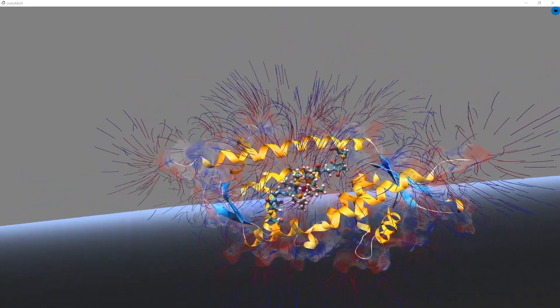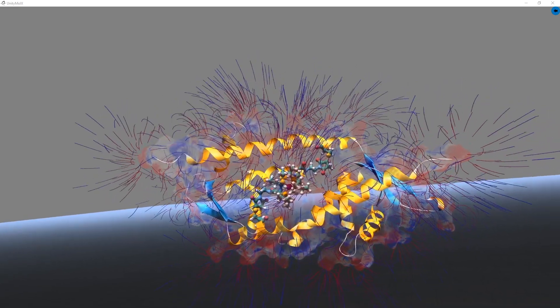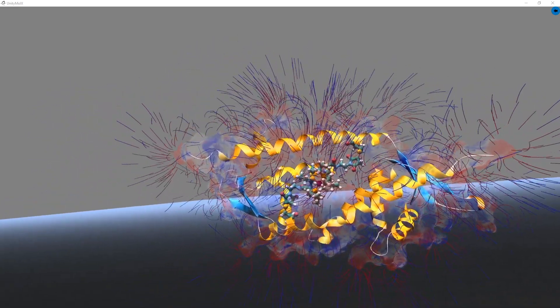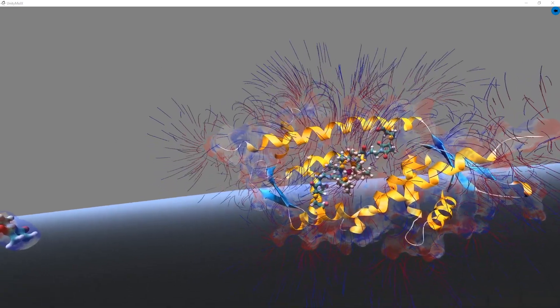The cysteine residues were introduced via site-directed mutagenesis. At the moment, we are showing the surface as a transparent view.